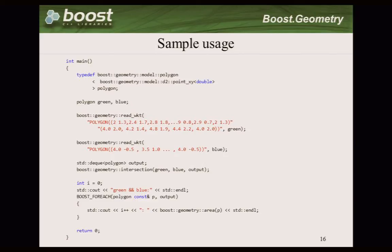This is another example, somewhat more complicated. We have our own models because people can use their own point model, but to test we have our own point model. We have a polygon of our point model, in two dimensions with X and Y. We read the WKT - probably everyone knows that - and we support it.